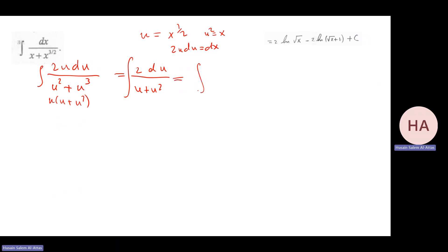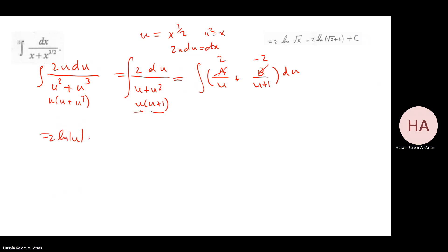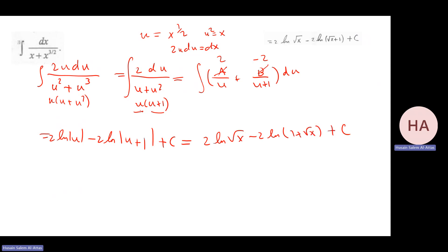Partial fractions: A/u + B/(u+1). Using the cover-up method: substitute u=0, A = 2; substitute u=-1, B = -2. Integrating: 2 ln|u| - 2 ln|u+1| + C. Substituting back u = √x: the answer is 2 ln|√x| - 2 ln|1 + √x| + C.